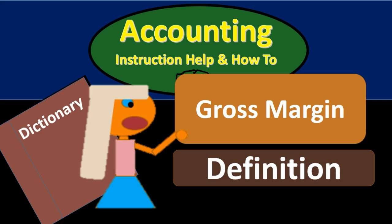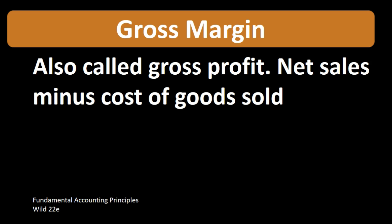In this lecture, we're going to define gross margin. According to Fundamental Accounting Principles, Wild 22nd edition, the definition of gross margin — also called gross profit — is net sales minus cost of goods sold.